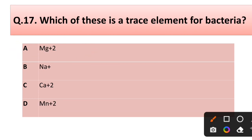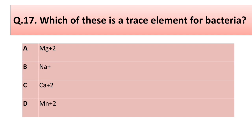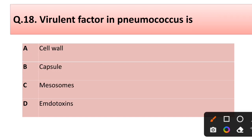Question number seventeen: which of these are trace elements for bacteria? Options: (a) magnesium, (b) sodium, (c) calcium, (d) manganese. Correct answer is option B: sodium. Question number eighteen: the virulence factor in Pneumococcus is — options: cell wall, capsule, mesosome, endotoxin. Correct answer is option D: endotoxin.